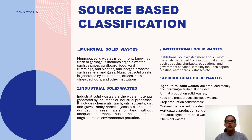Next, industrial solid waste. Industrial solid waste are the waste materials generated by industries or industrial processes. It includes chemicals, trash, dirt, etc., and many harmful gases also. These are dumped in sinks, rivers, or lands without adequate treatment, and therefore it becomes a large source of environmental pollution.